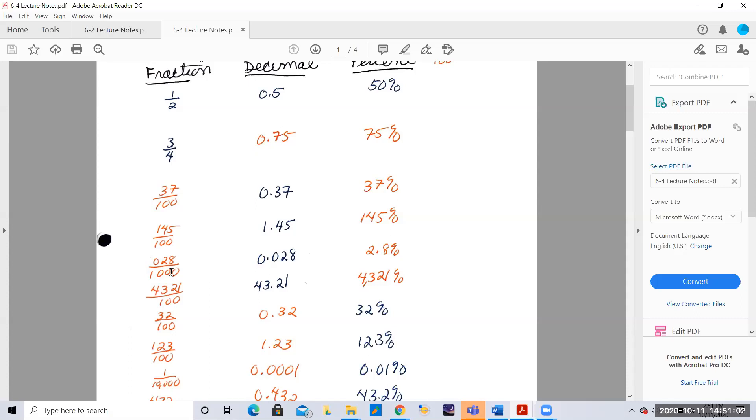That is 28 thousandths or 2.8 percent. So again, that's more than 100 percent; 1 is 100 percent. Or you could read all the way to the hundredths place, 43.21 hundredths or percent.